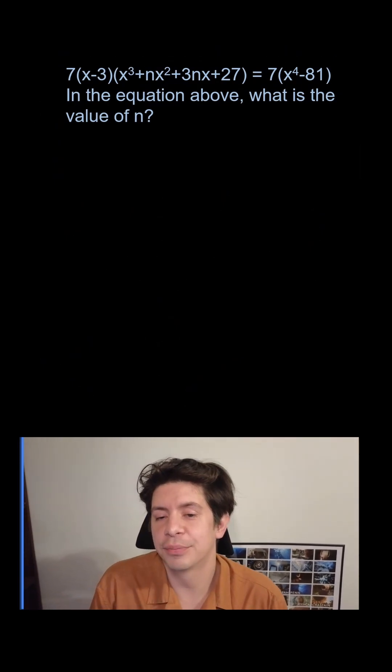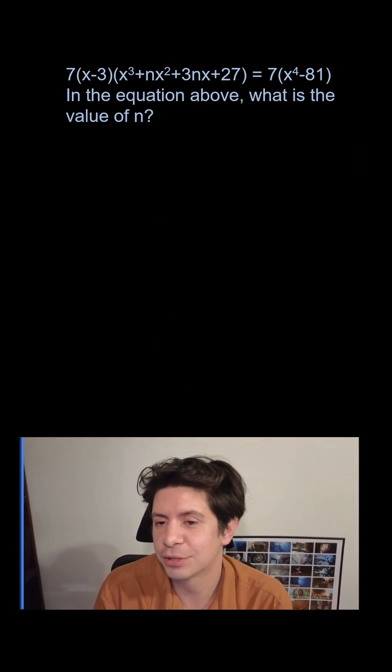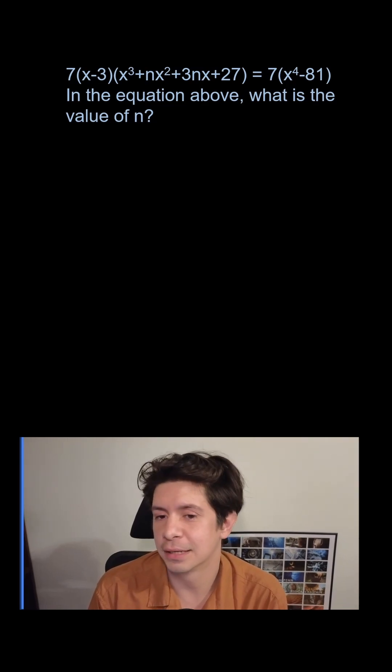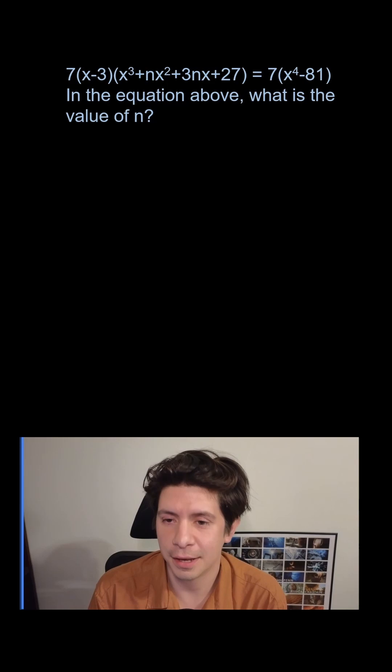We have 7(x - 3)(x³ + nx² + 3nx + 27) = 7x⁴ - 81. In the equation above, what is the value of n?